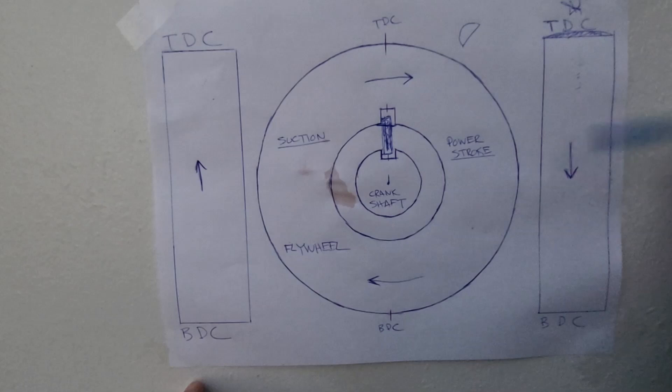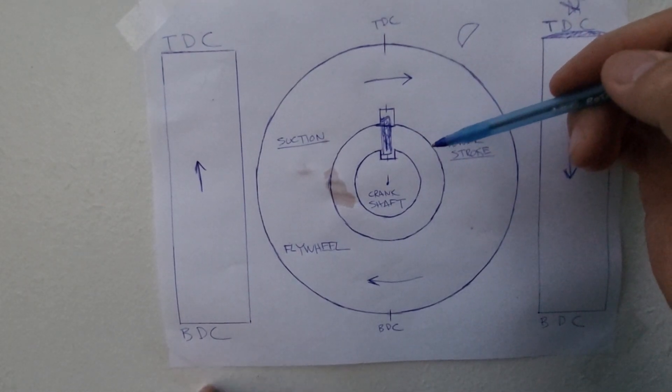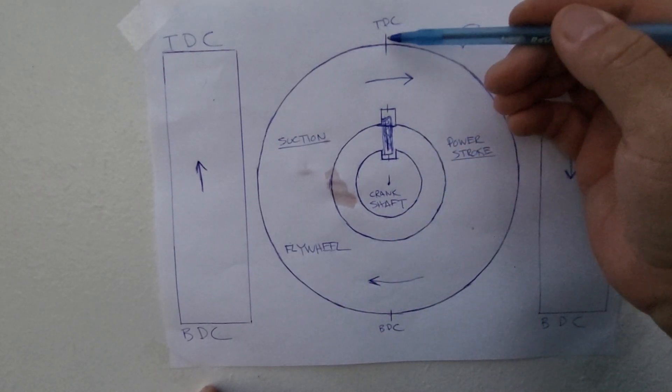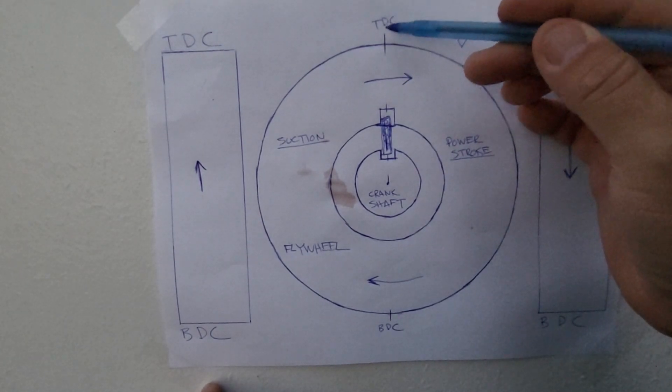So when the piston goes up, the magneto on the engine coil, the north-south part is passing the magneto, and at that point it sends the spark to the spark plug and it fires at top dead center.